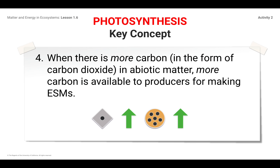We're going to examine the key concepts. We've got four key concepts for photosynthesis. Key concept number four: when there's more carbon in the form of carbon dioxide in abiotic matter, more carbon is available to producers for making ESMs. When there's more carbon, there's more available for producers in making ESMs, because we take carbon dioxide from the atmosphere, from the abiotic matter — air — and if there's more carbon, you can have more ESMs. Go ahead and pause the video and write this; you can shorten it however makes sense to you.